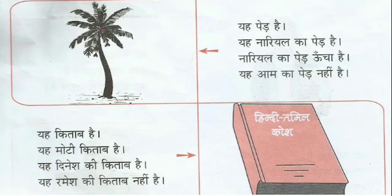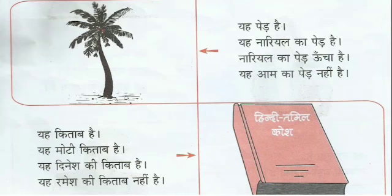Yeh Kitab Hai — this is a book. Yeh Mooti Kitab Hai — this is a big book. Mooti means big or thick. Yeh Dinesh Ki Kitab Hai — this is Dinesh's book. Yeh Ramesh Ki Kitab Nahi Hai — this is not Ramesh's book.